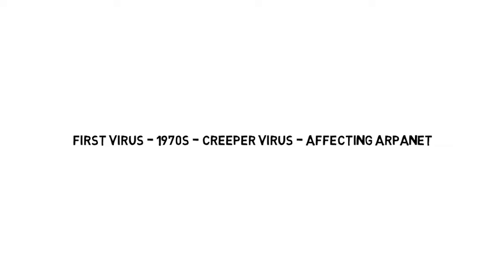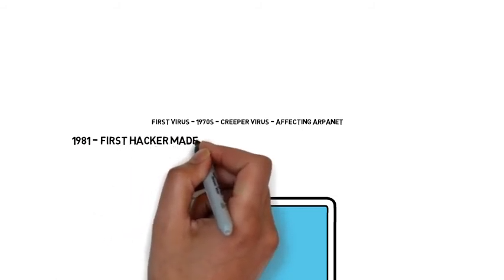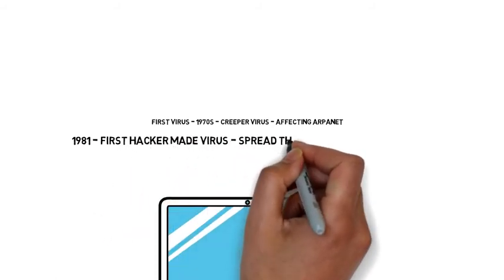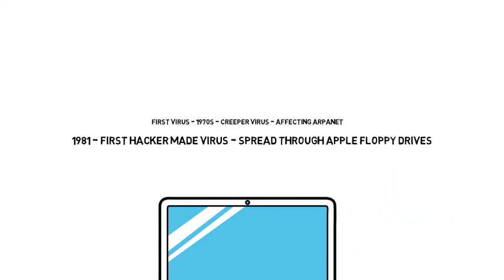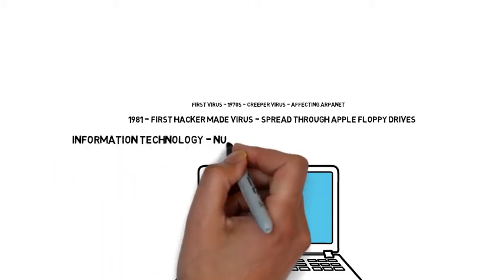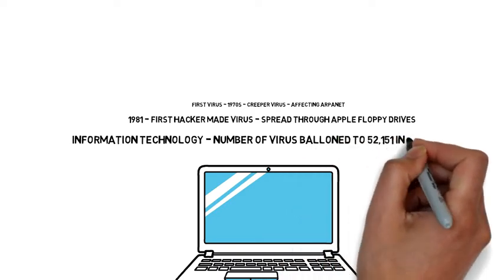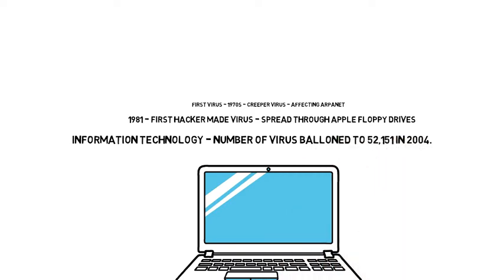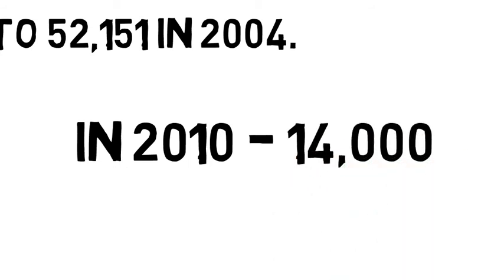It affected computers on the ARPANET. In 1981, the first hacker-made virus came into existence and spread through Apple floppy drives. According to the Information Technology Promotion Agency, the number of viruses ballooned to 52,151 in 2004. However, due to certain programs that completely eliminate viruses, their numbers decreased to about 14,000 in 2010.